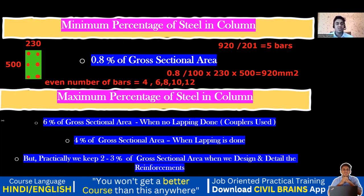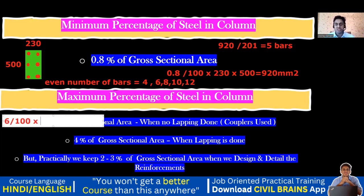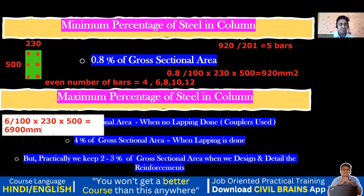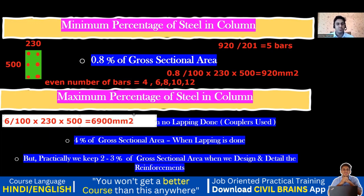Let's do the manual calculations. For 6 percent: 6 ÷ 100 × 230 × 500 = 6,900 mm². This is not practically achievable — it's only on paper, especially if no lapping is being done.